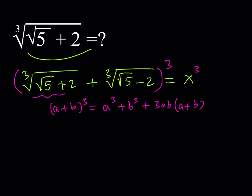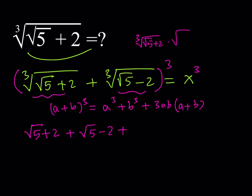So when we cube the first term, we get rid of the cube root, and b cubed is going to be square root of 5 minus 2, plus 3ab. Here's the important part: when you multiply the cube root of square root of 5 plus 2 and the cube root of square root of 5 minus 2, from the difference of two squares you multiply the inside and get 5 minus 4, which is 1. So it's going to be 3 times 1 times x, since a plus b equals x.